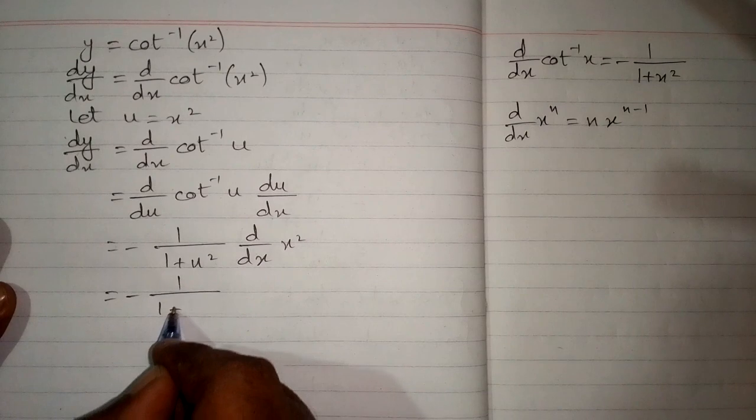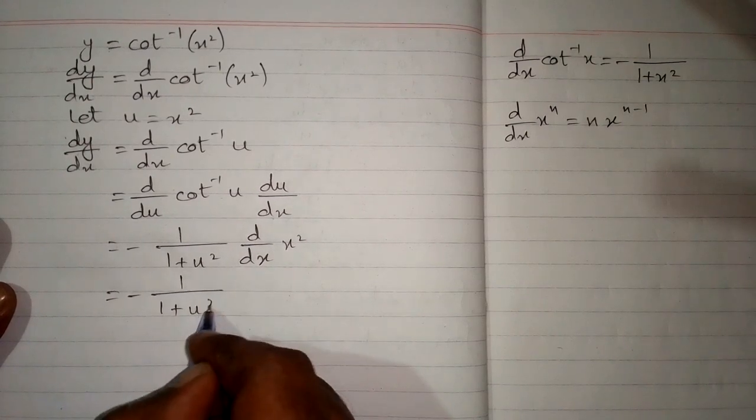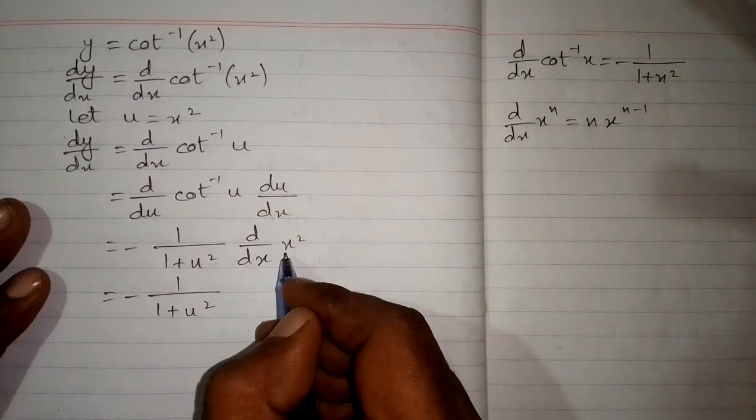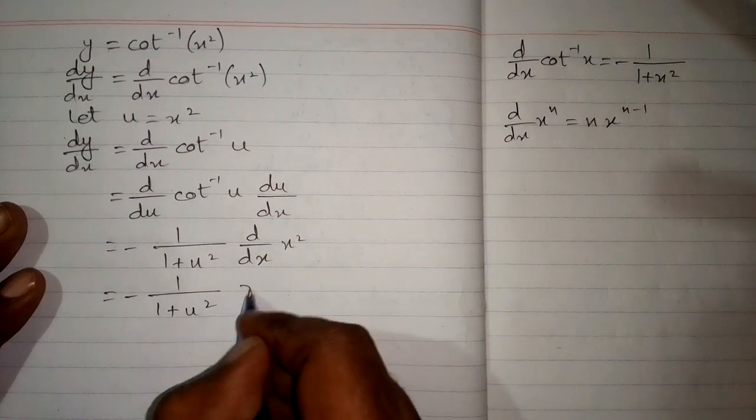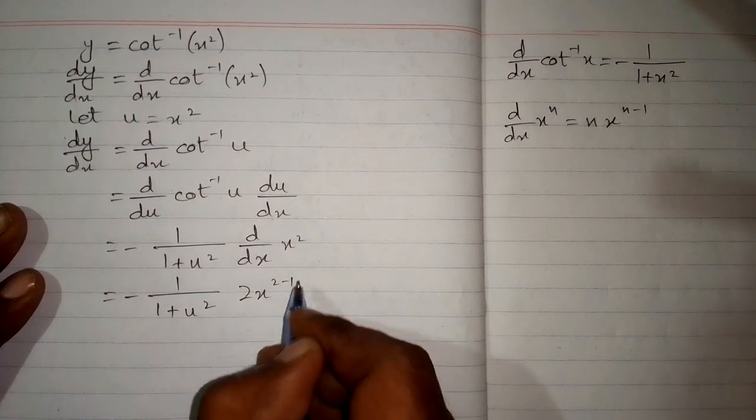Now we have minus 1 upon 1 plus u squared. The derivative of x squared is 2 times x to the power 2 minus 1.